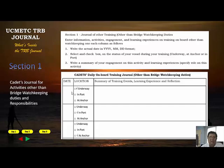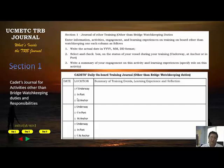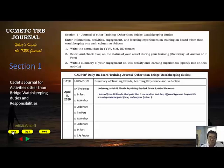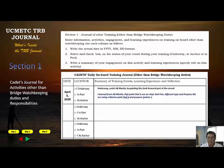The three categories are: underway, in port, or at anchor. You check whichever describes the status of the vessel when you had the activity. For example, on day one on board — April 15, 2020 — the ship is underway. You write in your summary: 'Underway — assist AB Manila in painting the deck forward part of the vessel.' That's the title of your journal entry for that day.